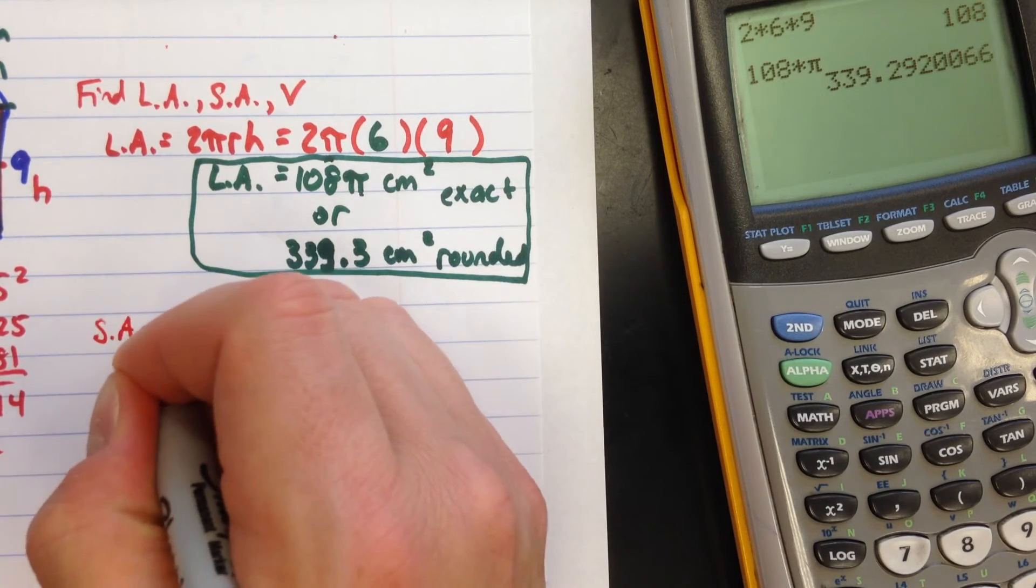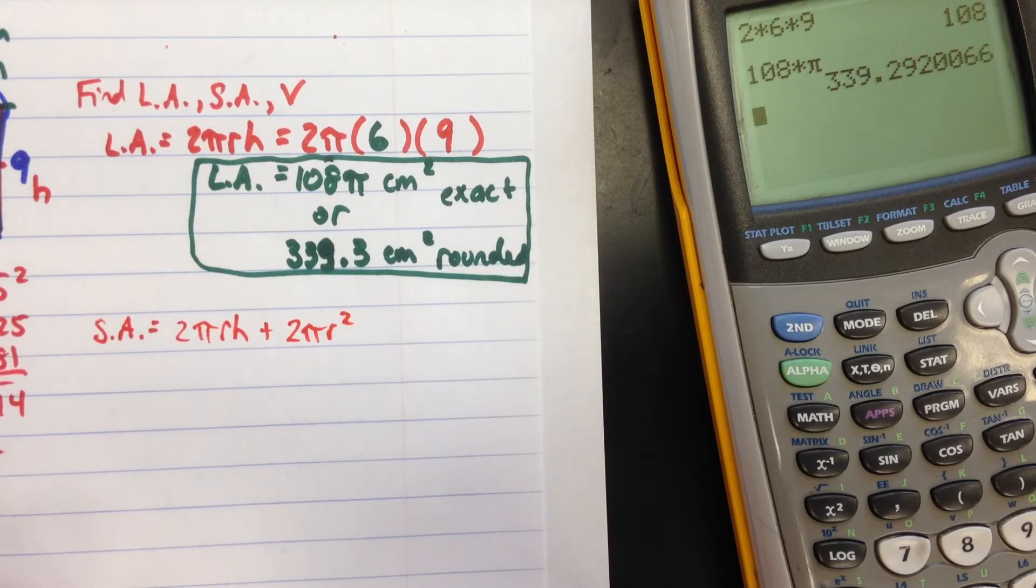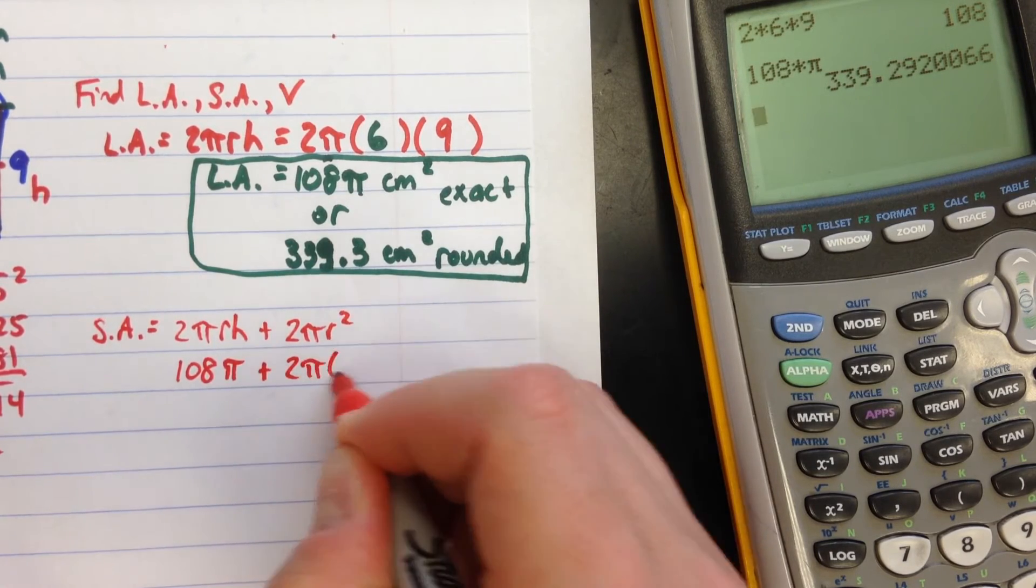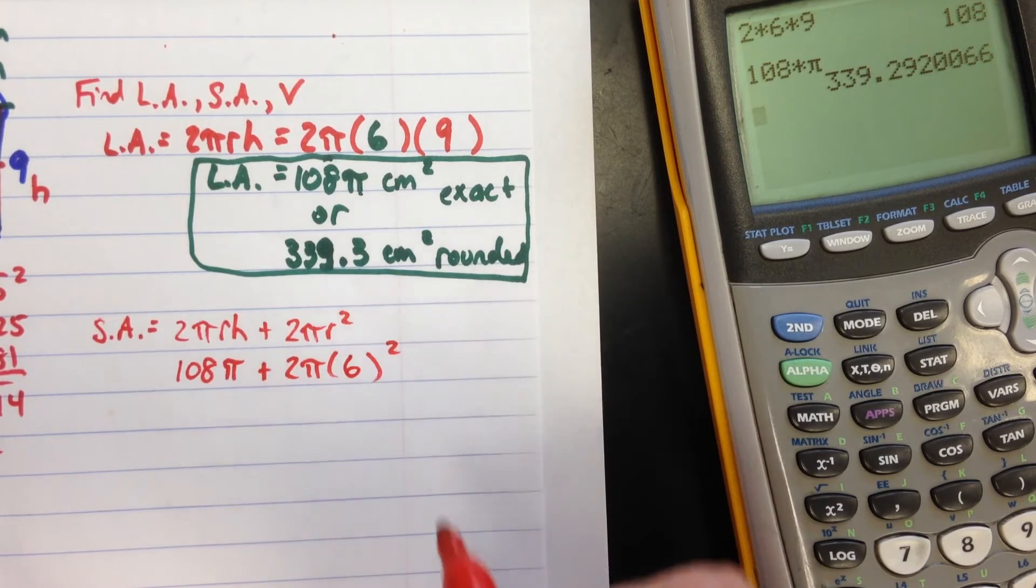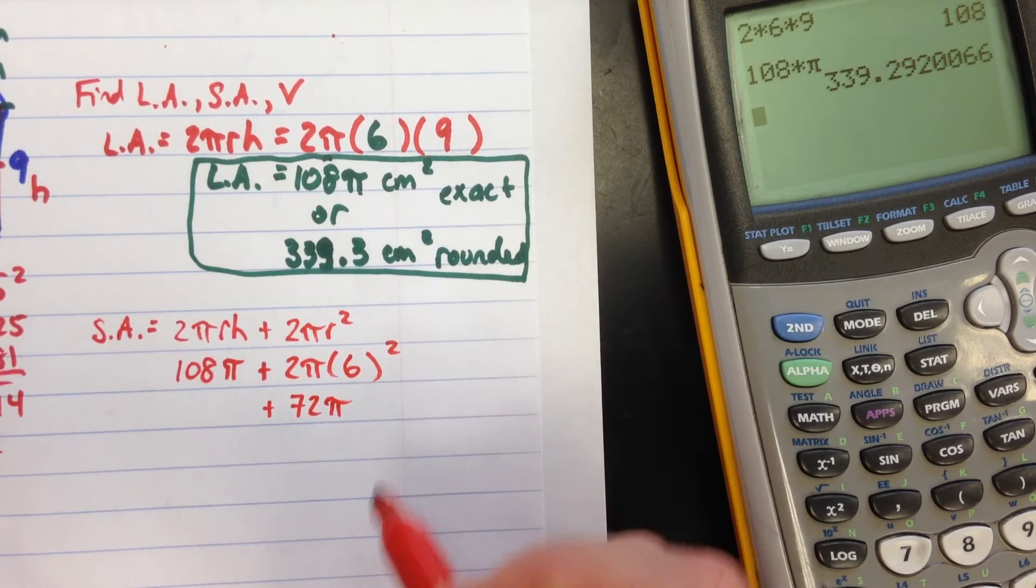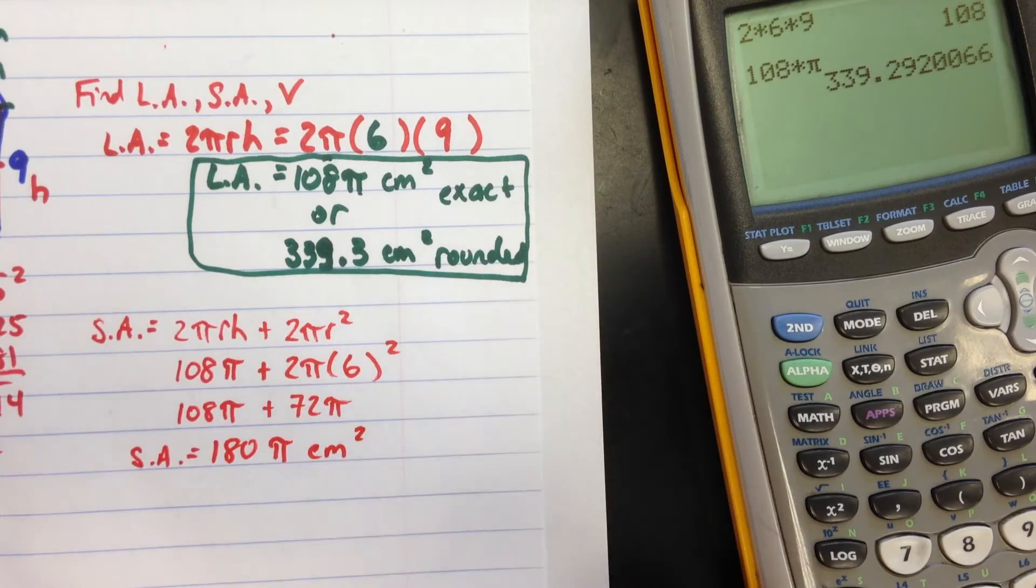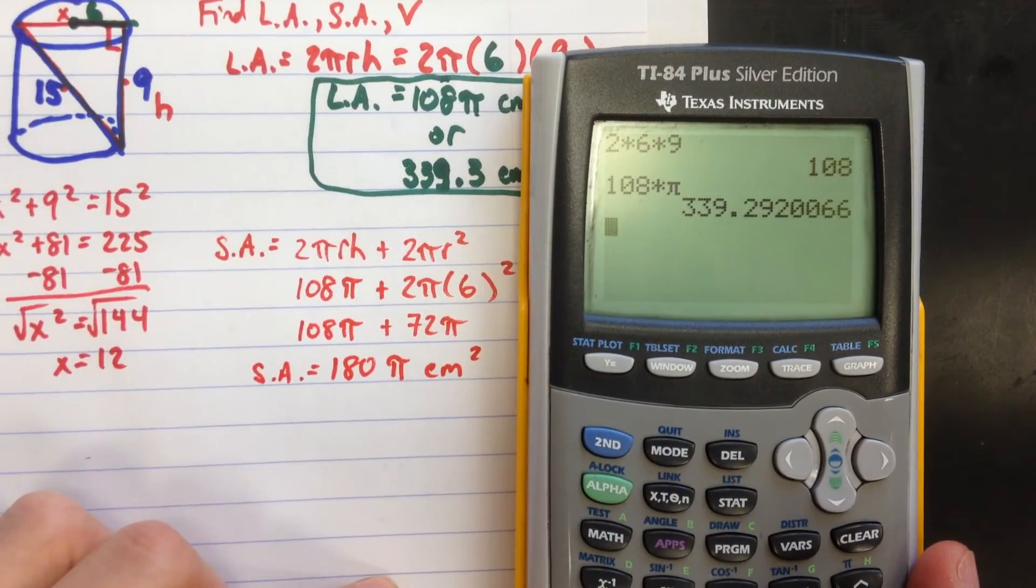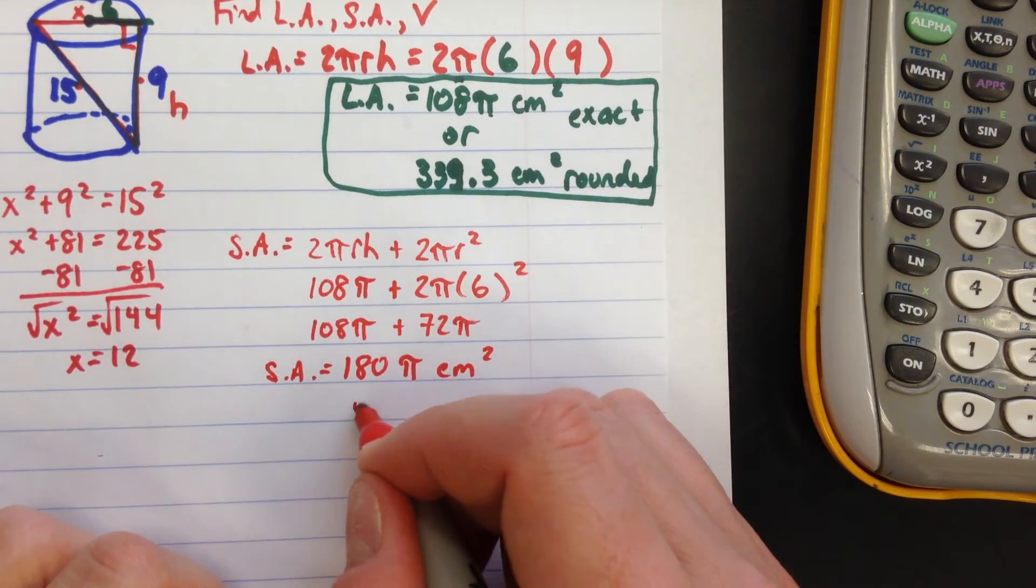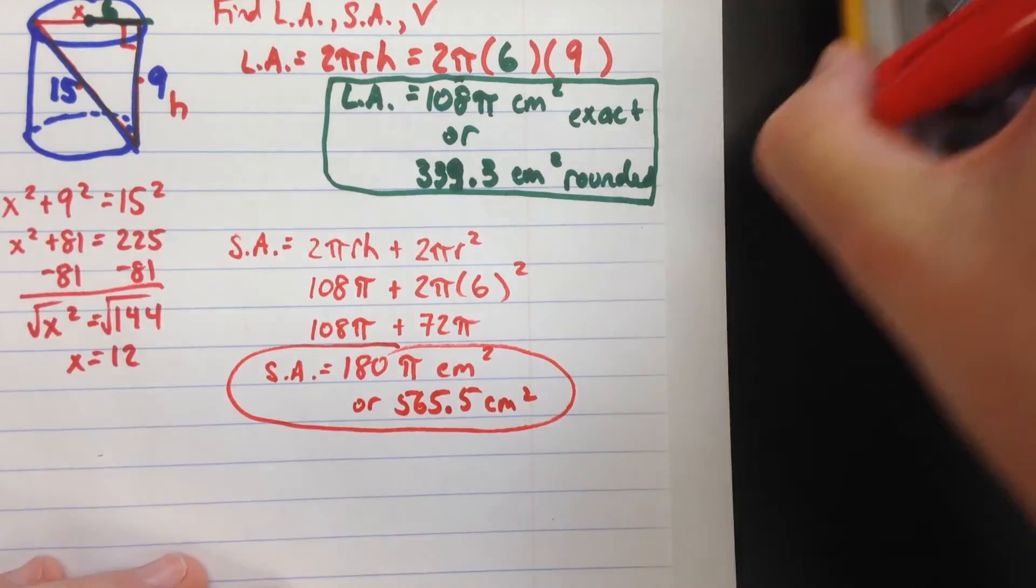Surface area: that was 2πrh plus we have two bases, two circles, which are both πr². The lateral area we already found, that was 108π. I'll write the exact answer. Plus 2π times radius squared. Well the radius is 6, so 6² is 36. 36 times 2 is 72π plus 108π. So the surface area, you can either write 180π cm²—that's exact—or if we take the calculator, 565.5 cm². Both answers are good.